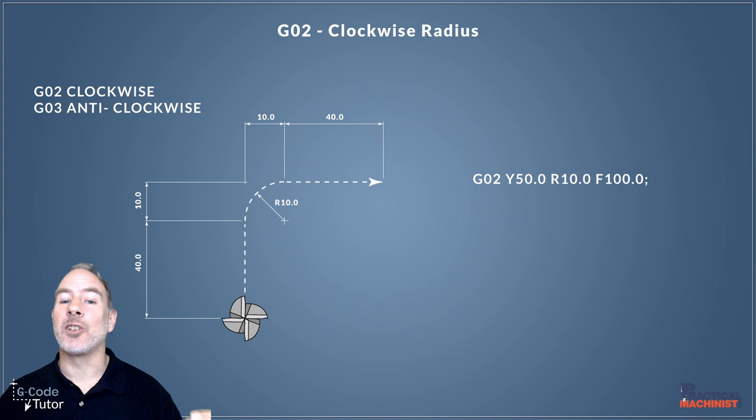We're going to start off with G02, that's our clockwise radius direction. We're moving up in Y to the end point of the radius, Y50. Then we add our 10mm radius by giving an R value. This produces a 50mm straight line with a 10mm radius at the end. We have to give a feed rate because G02 acts like G01 in that it won't work unless we have a feed rate active. We don't need to apply this to every line.